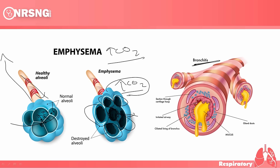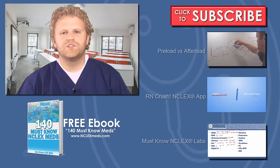With bronchitis, inflammation occurs and we also have all this excessive mucus production. Already these patients are not able to exchange gas as they should, but they also have this excessive mucus production which makes it even harder for them to breathe.